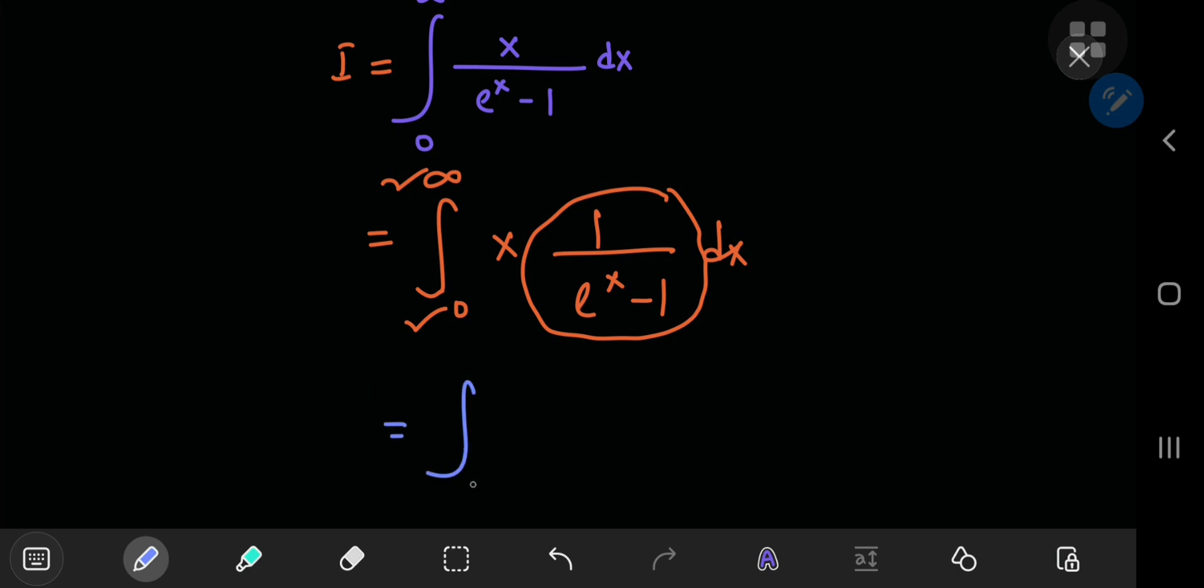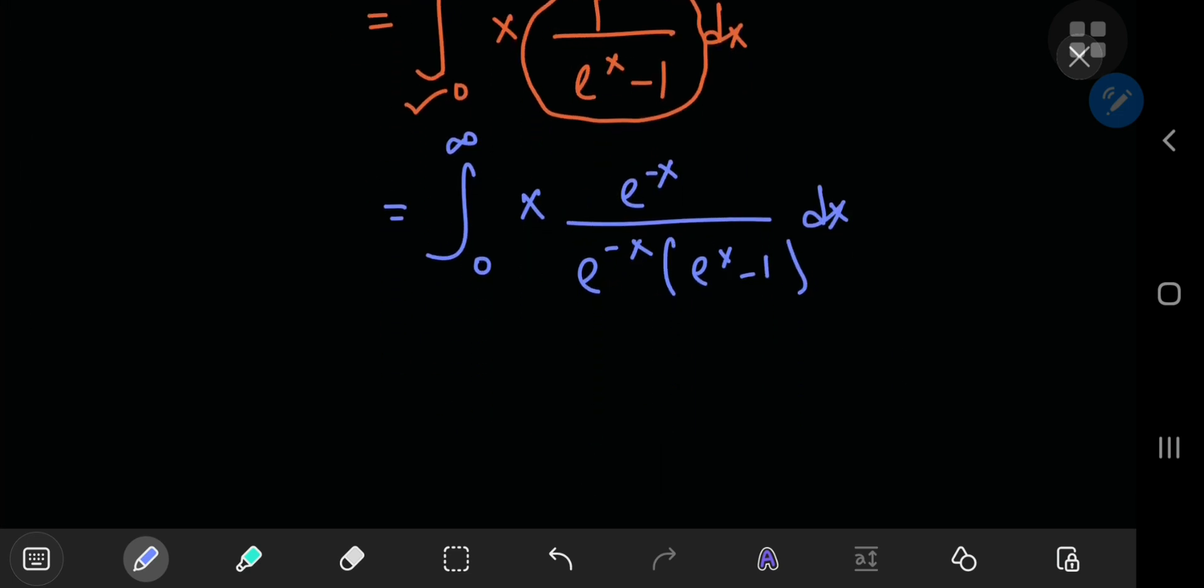One thing I can do to get something more palatable in this case is multiply upstairs and downstairs by e to the negative x. So that does a pretty good job because now you have the integral from 0 to infinity of x times this term up here, e to the negative x times 1 by, now these two exponential terms cancel out and you're left with 1 minus e to the negative x.